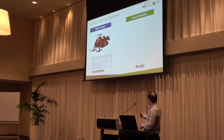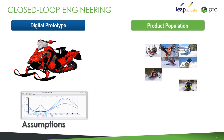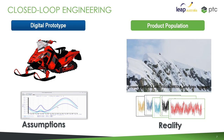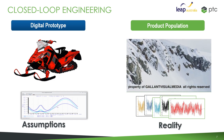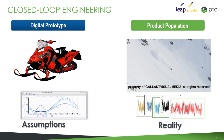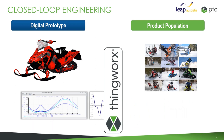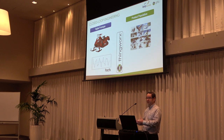With closed-loop engineering, we've got our digital prototype that we've built. While we were designing it, we made assumptions about how it's going to be used and what the load conditions might be. Then we have physical products out there in the real world - maybe a first prototype in field testing, or a product population being used by users generating real-world data. Users don't use it how we want them to - they use it how they decide to. That can lead to warranty claims and other problems. What we can do is take that real-world data and replace those design assumptions with facts - factual data from the product population - allowing us to optimise product quality and maybe build better products.